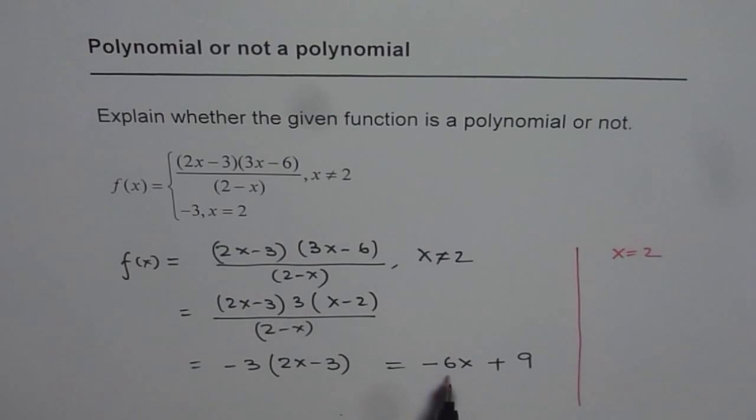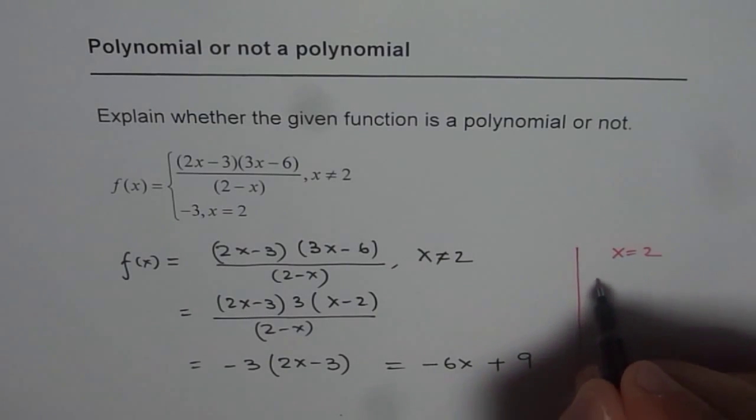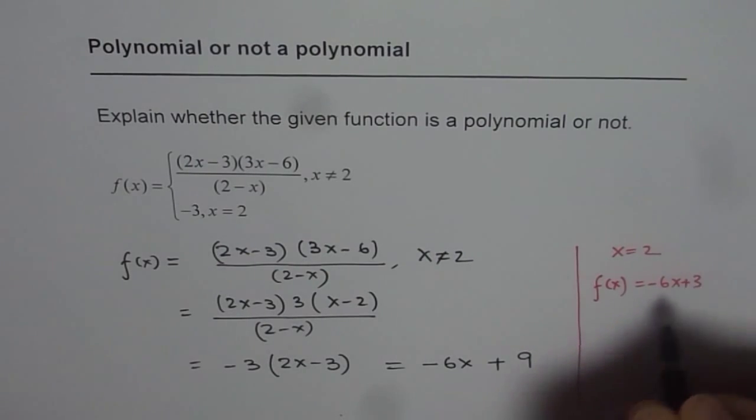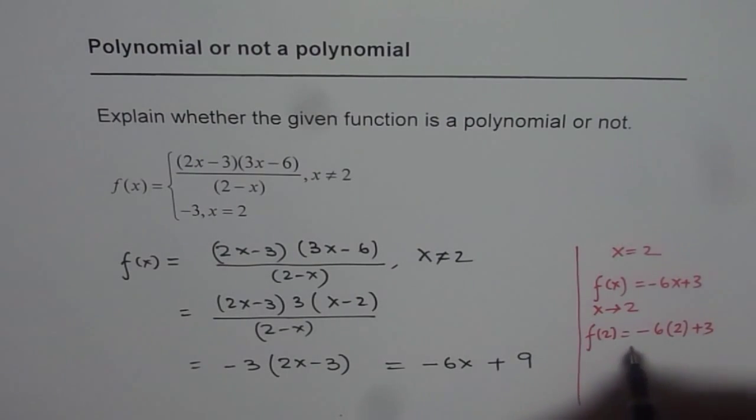Let's substitute 2 here and let's see where does it approach. So if I write f of x is equals to minus 6x plus 9, and if I say if x approaches 2, if it comes very very closer to 2, then where will f of x approach?